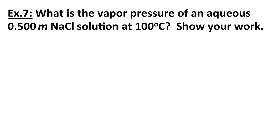Let's try a question involving vapor pressure lowering: what is the vapor pressure of an aqueous 0.500 molal NaCl solution at 100 degrees Celsius? At 100 degrees Celsius, pure water boils. Boiling requires the vapor pressure of the liquid to equal the external atmospheric pressure, and at sea level that is 1 atmosphere or 760 torr. So the vapor pressure of water at 100 degrees Celsius is 1 atmosphere.